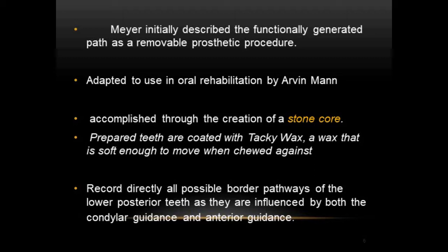In summary, the FGP technique involves coating the prepared teeth with a tacky functional wax that is soft enough to be displaced when chewed against. This records the border pathways of the lower posterior teeth as influenced by condylar guidance and anterior guidance. These border pathways are recorded in the functional wax and then captured in a stone core, against which the upper posterior teeth are subsequently waxed up.